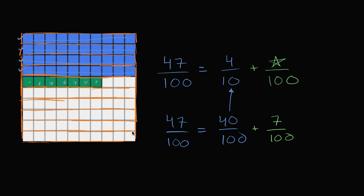Notice, if you look at the orange lines, I've divided my square not into 100 equal sections, but into 10 equal sections. And so you see these 40 hundredths that are in blue right over there, that's the same thing as 1 tenths, 2 tenths, 3 tenths, and 4 tenths. So that is the 4 tenths right over there.